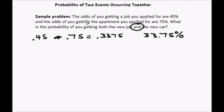Now if you think about this, these two events are independent. The odds of you getting a job have nothing to do with the odds of you getting an apartment. So this is an example of the probability of two independent events occurring together.